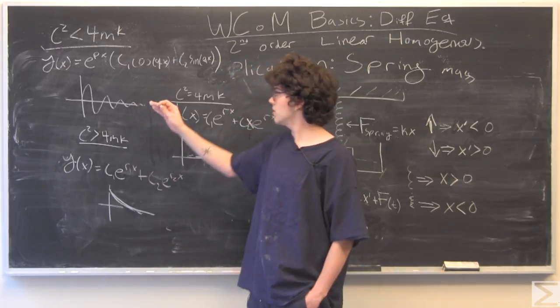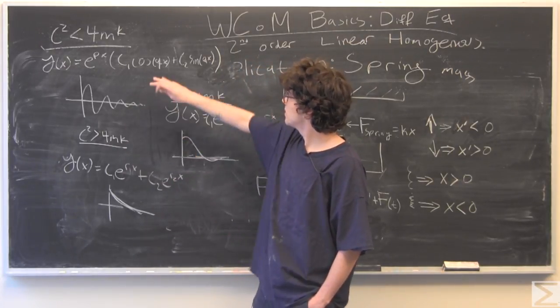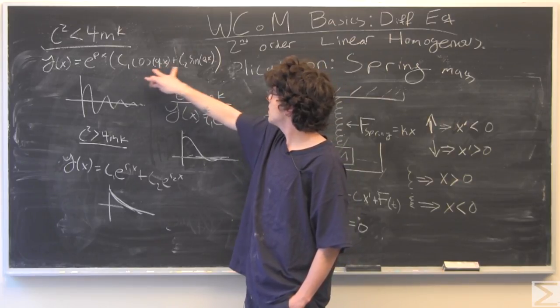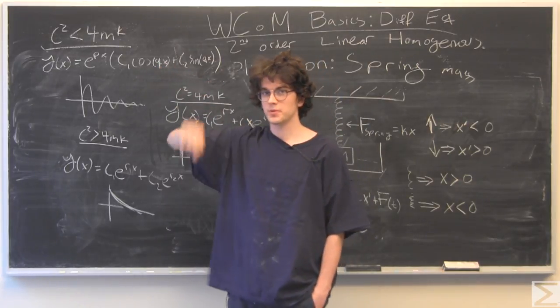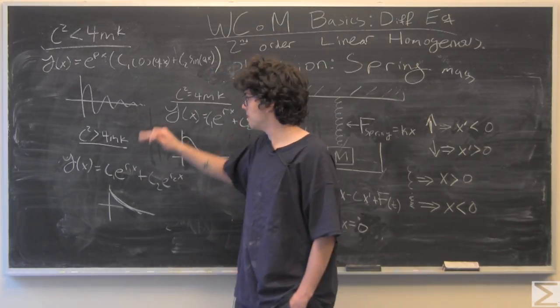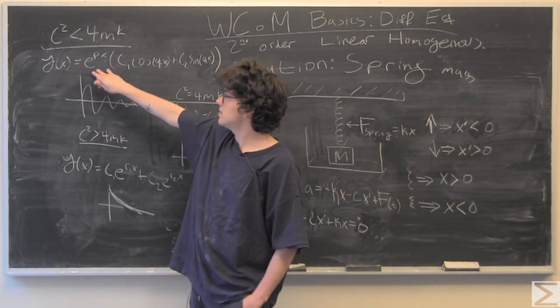So in this scenario, we have two parts. We have cosine and sine, which will produce some kind of sinusoidal path.